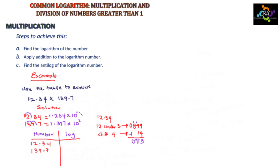Adding 14 to 0899 gives 0913. The integer part is 1, because we converted to standard form and 10 was raised to the power 1. So the logarithm of 12.34 is 1.0913.